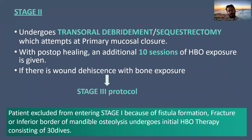In stage two protocol, you remove the necrotic bone, debride the tissues, remove the sequestrum, and attempt primary closure of the mucosa. With post-op healing, an additional 10 sessions of HBO exposure is given. If there is still dehiscence of tissue and bone exposure, then you proceed to stage three protocol.